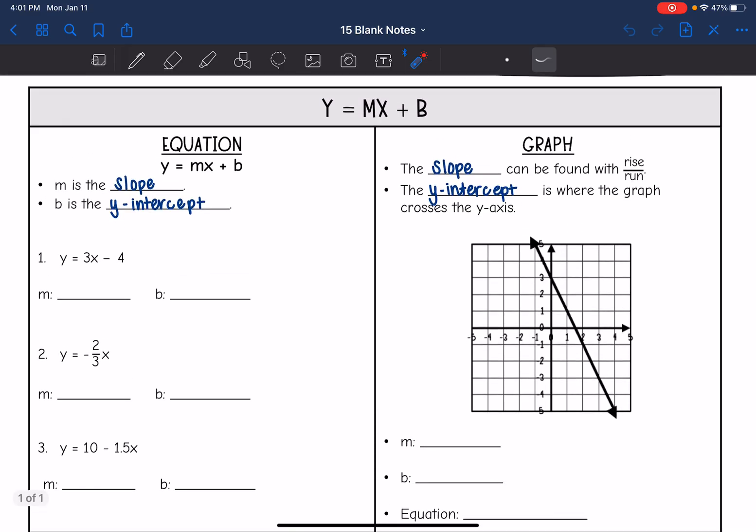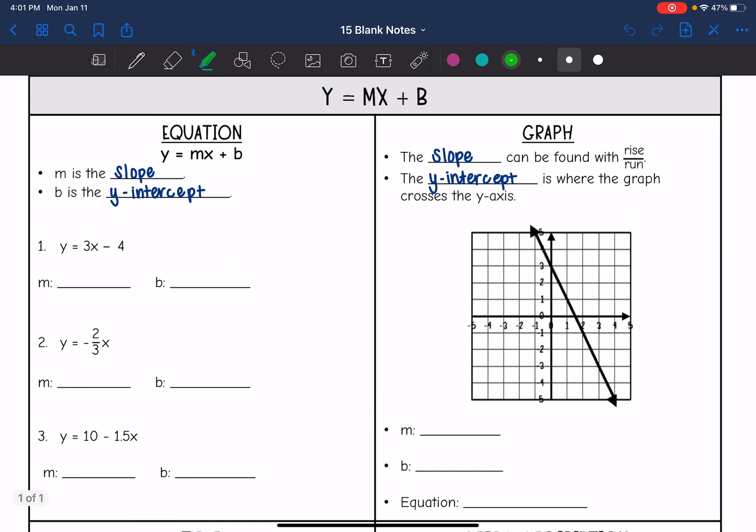We know that slope intercept form is y equals mx plus b. m is always the number in front of x and that is the slope, and then b is the number by itself and that is the y intercept. Remember that sign in front of b is attached to it. So all we are going to do is identify the slope and the y intercept.